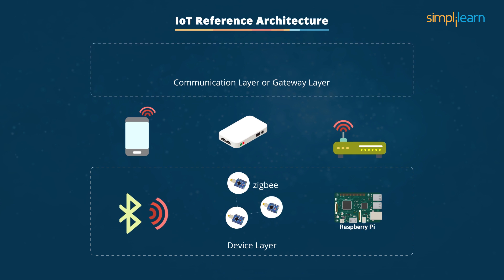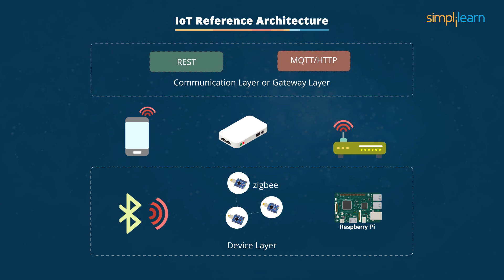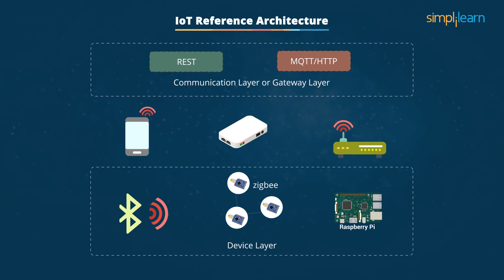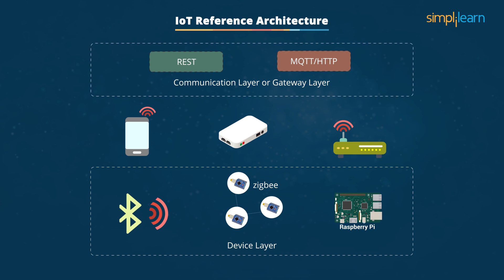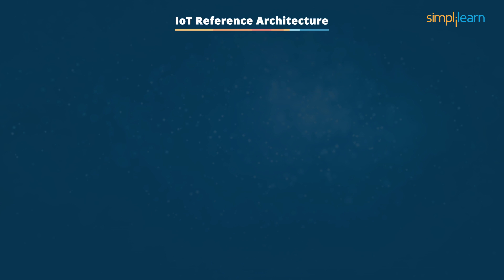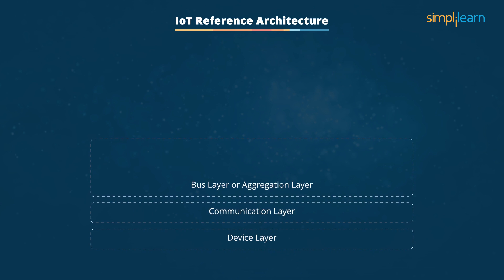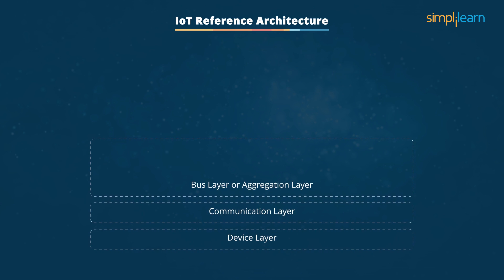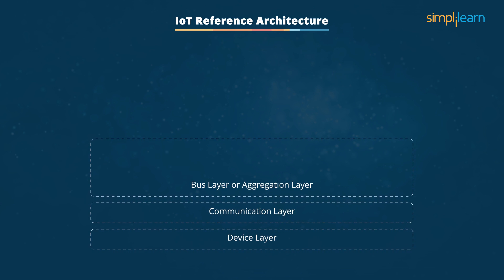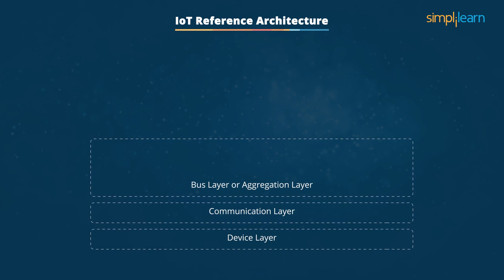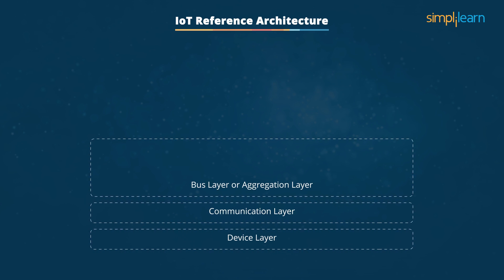The communication layer, or gateway layer, has REST protocols and other application-level protocols. Both layers are tightly coupled and generate an enormous amount of data. The bus layer, or aggregation layer, acts as a message broker. It forms a bridge between the data and the communication layer for the sensors.